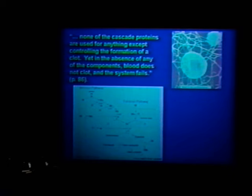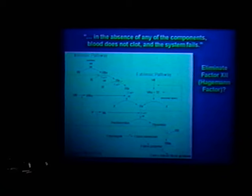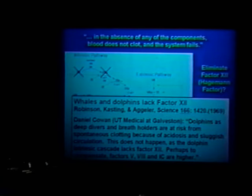What you wrote in your book is that none of the cascade proteins are used for anything except controlling the formation of the clot, and in the absence of any of the components blood does not clot and the system fails — again your words. Now here's the hard part: one of those components you talked about is called Factor 12, or Hagemann factor. You'd think if we take it away the system should fail, so there shouldn't be any living organisms missing Hagemann factor. But it turns out there are: dolphins and porpoises don't have it.